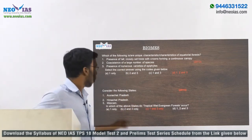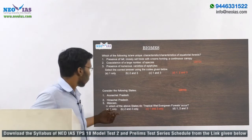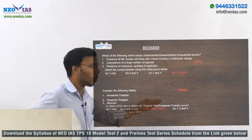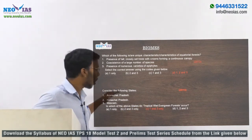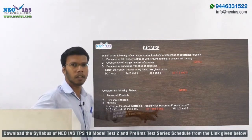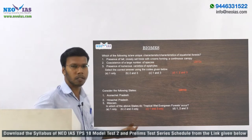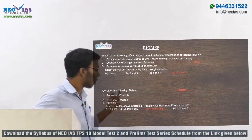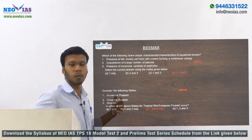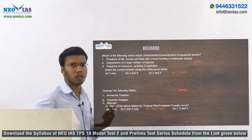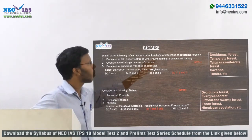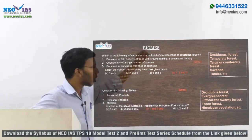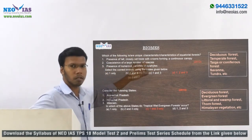Another question type from biomes is about vegetation. For example, they may give a vegetation type like Tropical Wet Evergreen Forest and ask which states have that vegetation. India has many vegetation types: Tropical Wet Evergreen Forest, Semi-Evergreen Forest, Deciduous Forest, Dry Deciduous Forest, Subtropical Vegetation, Littoral and Swamp Vegetation, Alpine Vegetation, etc. The main features to study are those of Deciduous Forest, Temperate Forest, Taiga or Coniferous Forest, Savanna Biome, Tundra Vegetation, and Equatorial Forest.